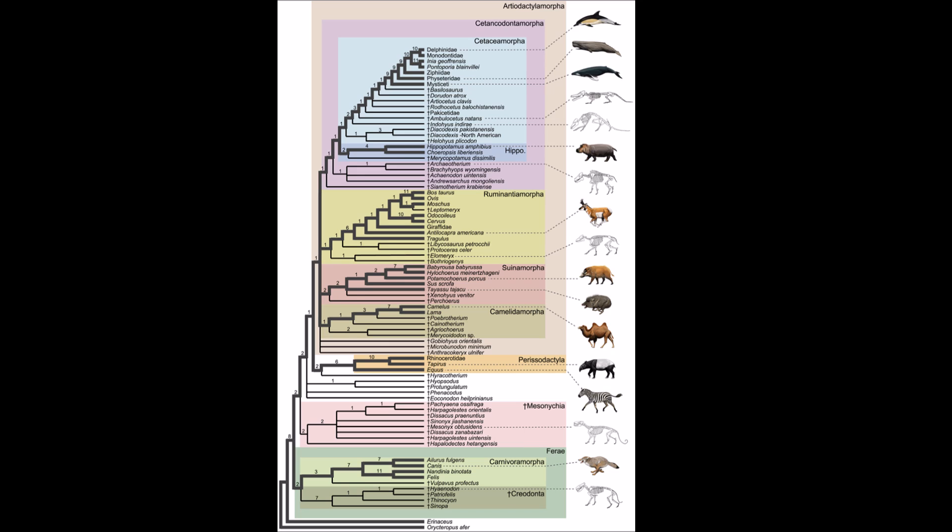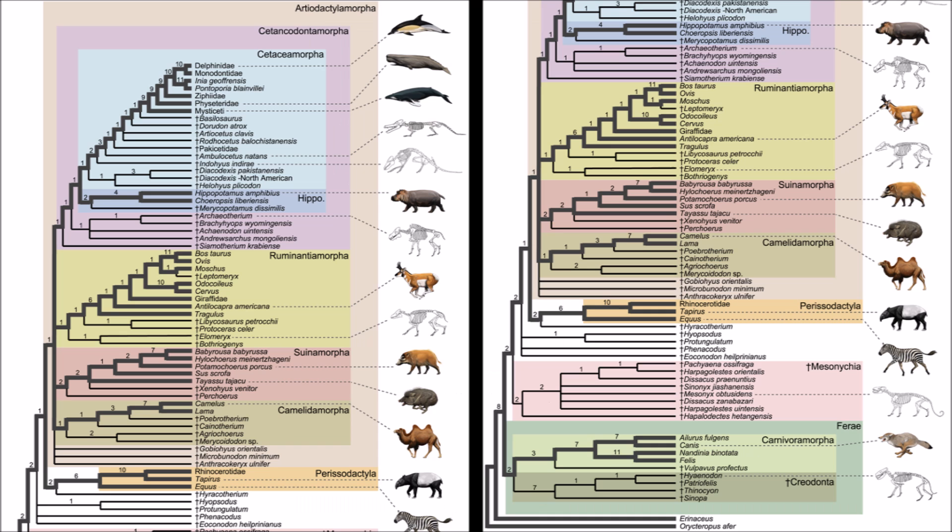This is a cladogram, or a tree of life. This shows what is related to what according to evolutionary theory. Let's explain some more about how evolution scientists define these relationships.